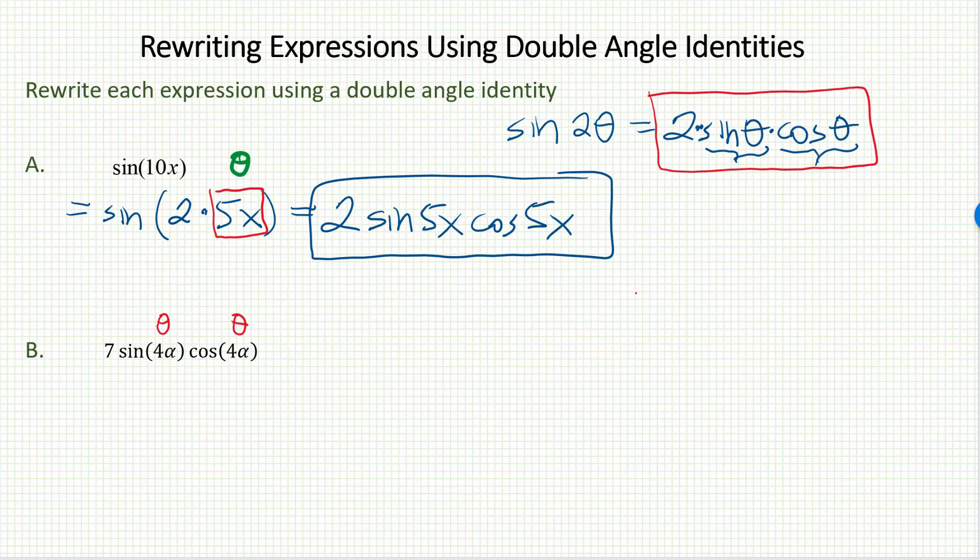Is there a way that I can rewrite this so that it's equivalent but there's a 2 in front instead of a 7? The answer is yeah, I just need to break the 7 down into a little multiplication problem. Something times 2. It would just be half of 7, right? 7 halves or 3 and a half.